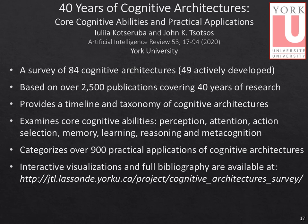There was a recent review covering 40 years of cognitive architecture — a survey of 84 cognitive architectures done at York University, with 49 still under active development. This was based on 2,500 publications covering 40 years of research. It provides a timeline and taxonomy of different kinds of cognitive architectures, examines core cognitive capabilities in terms of which architectures have strengths and weaknesses in different areas, and then categorizes over 900 practical applications of cognitive architectures. In addition to the paper itself, there are visualizations and a full bibliography available at the associated website.